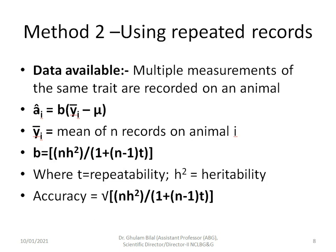Method 2: if we have more than one record — multiple measurements of the same trait on an animal — we simply take the mean of N records on that animal. We put that mean into the formula, and B in this case is: B = (N × h²) / (1 + (N − 1) × t), where t is the repeatability of the trait and h² is heritability. Accuracy is again the square root of B.